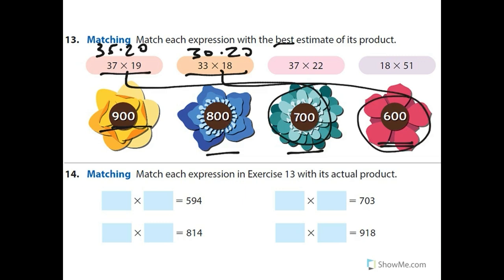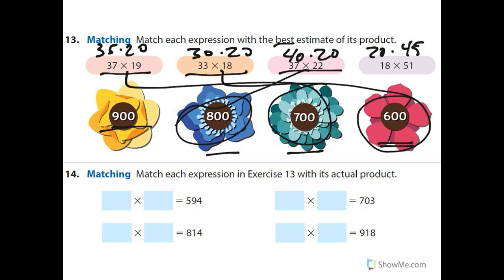Go ahead and do the next two by yourself. For 37 times something, 35 times 20 would be even closer, but we've already got our 700, so let's do 40 times 20. And then 45 times 20 — 50 is a bit far away from 45, but that's the one that's going to be 900.